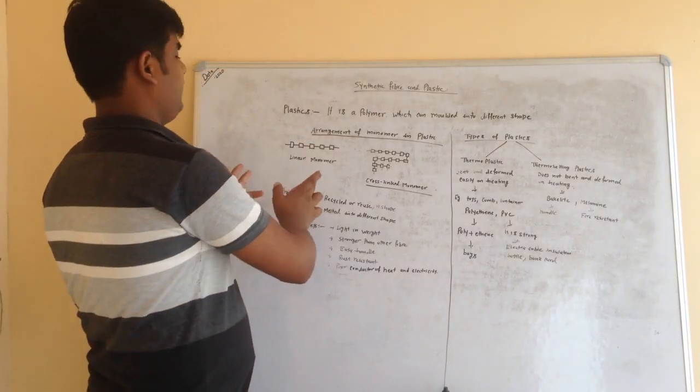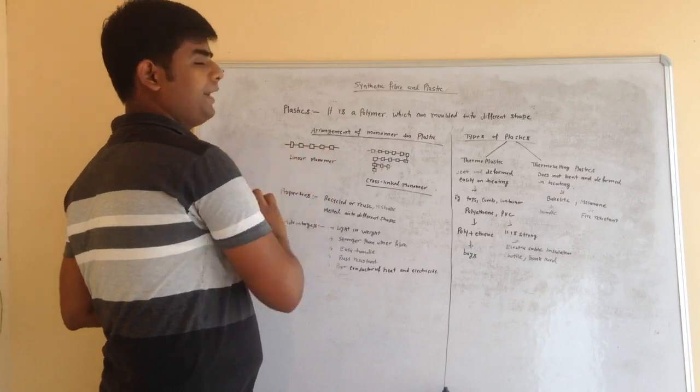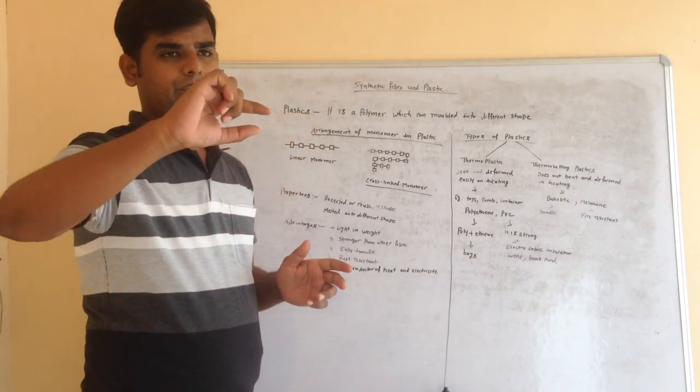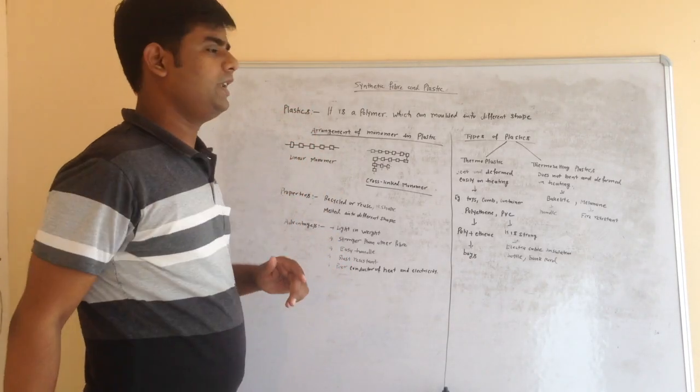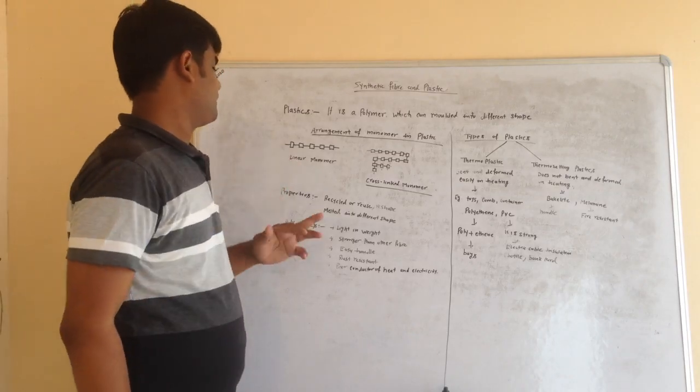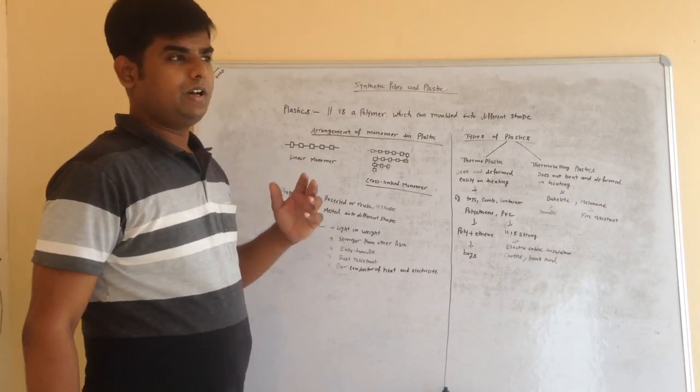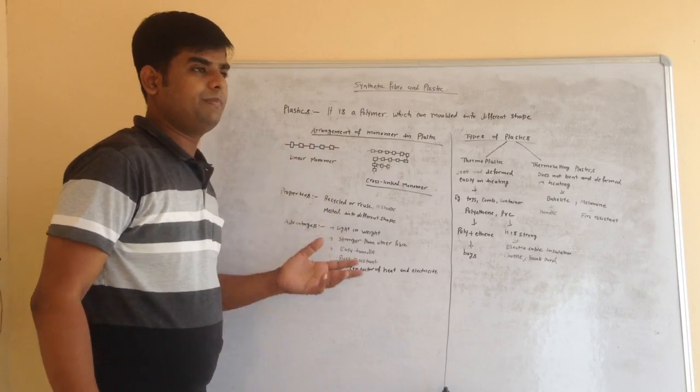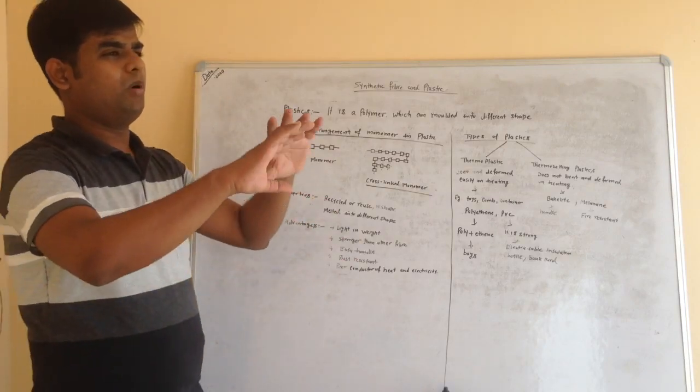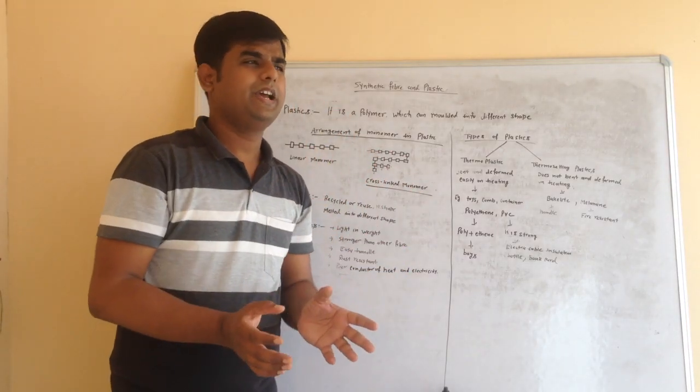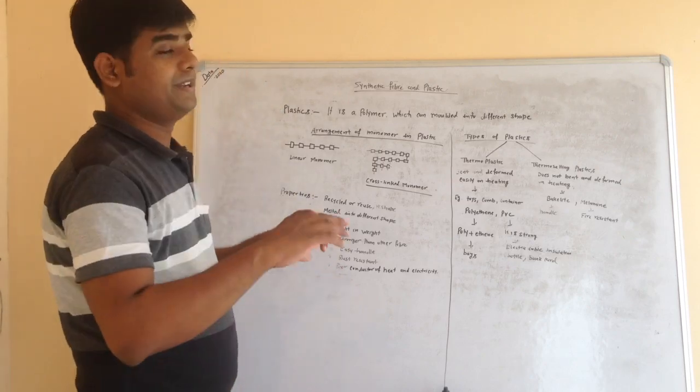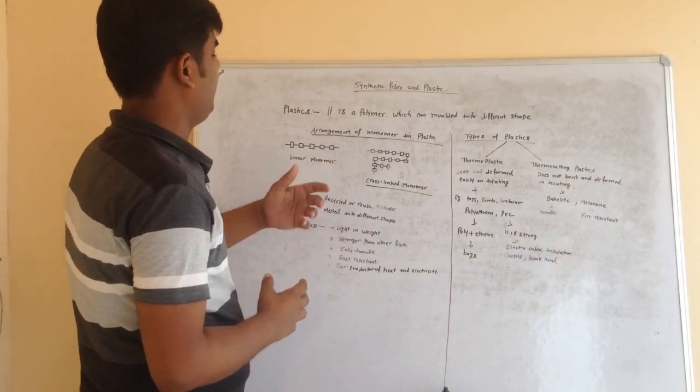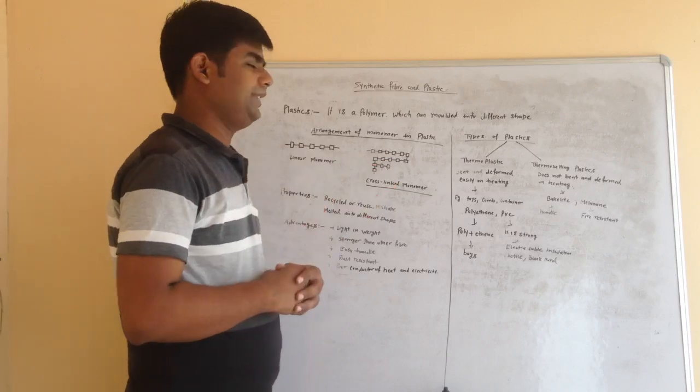These monomers have two ends and they are serially linked. This kind of arrangement in plastics can be molded into different shapes, can bend easily, and it can be reset.